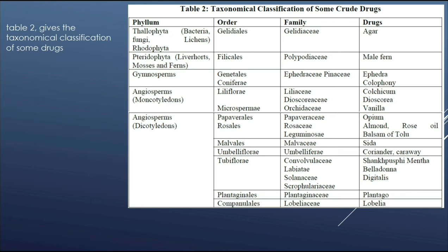The third phylum or kingdom is gymnosperms. In that, order Gnetales contains family ephedraceae, and the plant ephedra contains various drugs which are useful today. The next phylum or kingdom is angiosperms. In that, the class monocotyledons — the order present is Liliflorae, which has family liliaceae, and the drug present is colchicum. In the same order Liliflorae, the family dioscoreaceae is present, and the dioscorea plant, especially dioscorea bulbifera, contains various drugs. In the same kingdom angiosperms, subclass monocotyledons, order Microspermae, family orchidaceae — the drug present is vanilla.